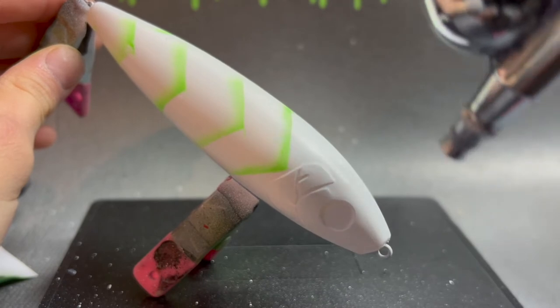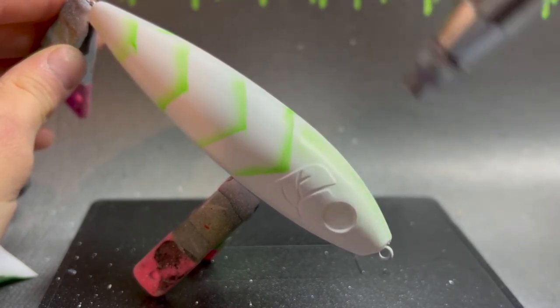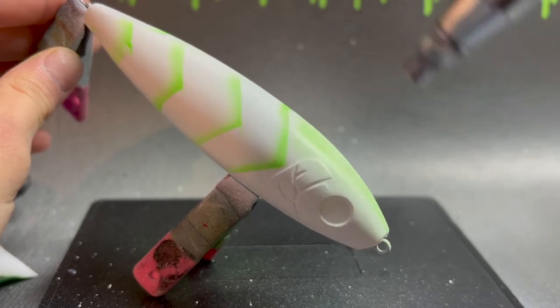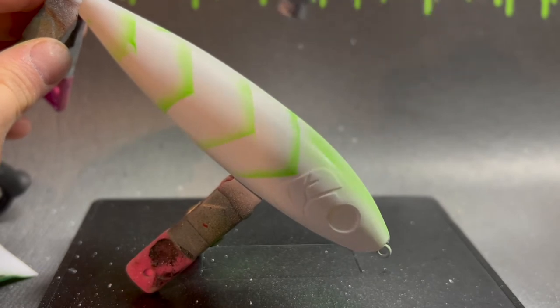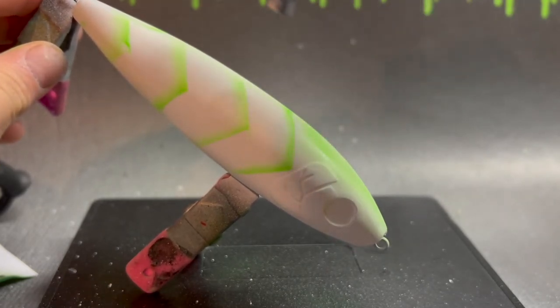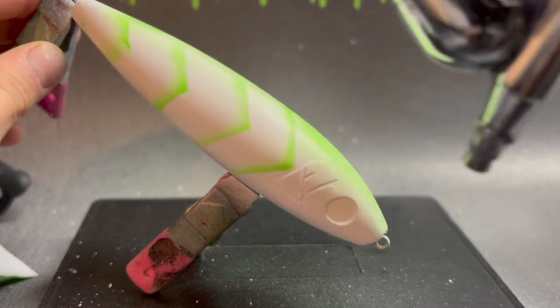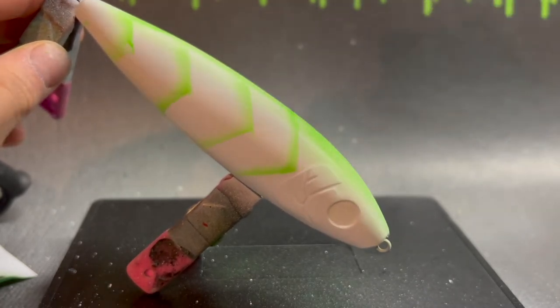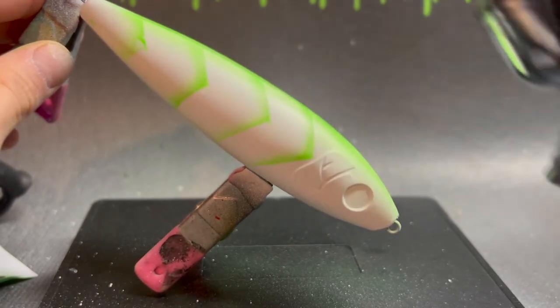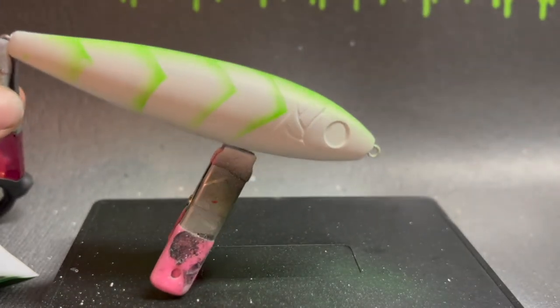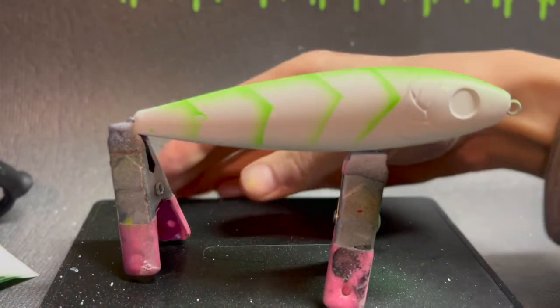And we're going to layer up these colors. Oh this is going to be an awesome looking one. Flip it over. You can see it has that fluorescent green.